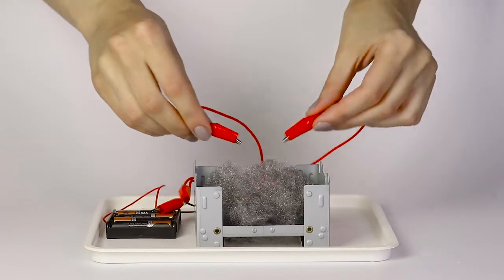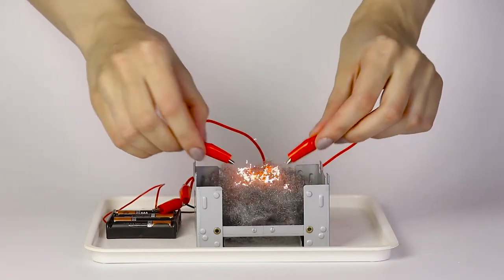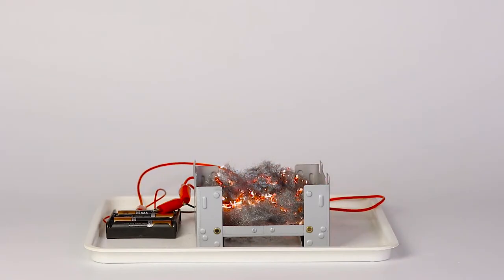Take the loose ends of the crocodile clip wires and touch the wool with them. The wool will ignite.